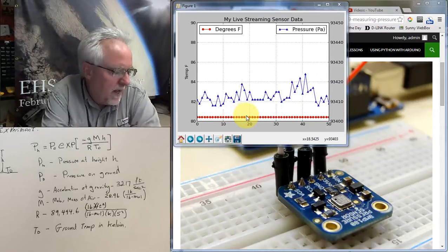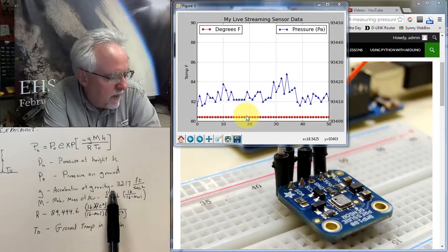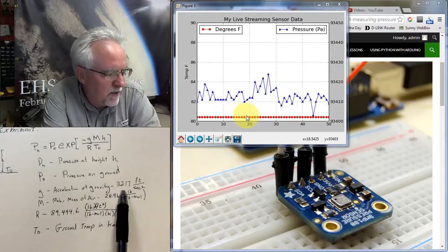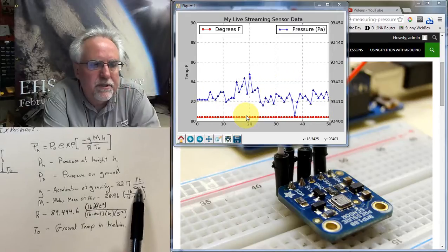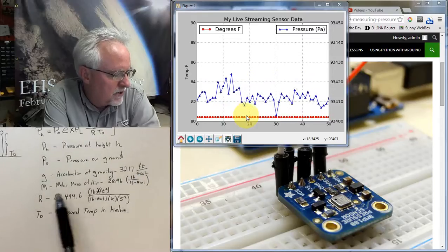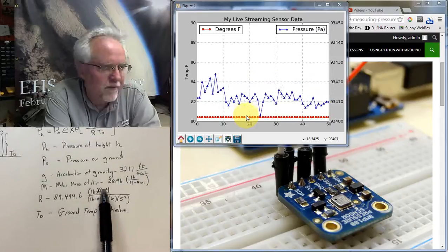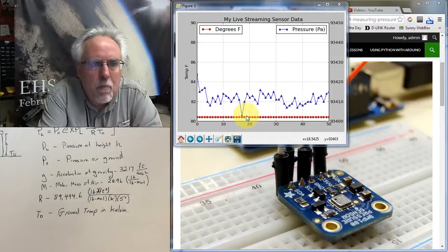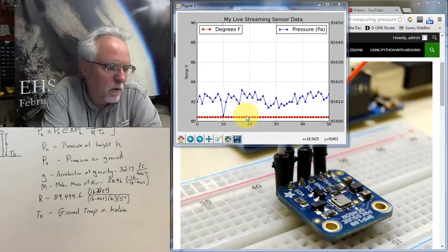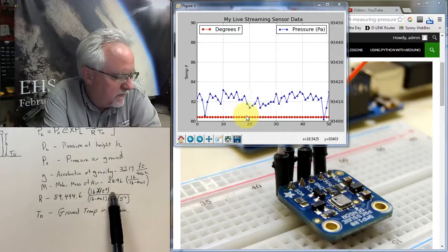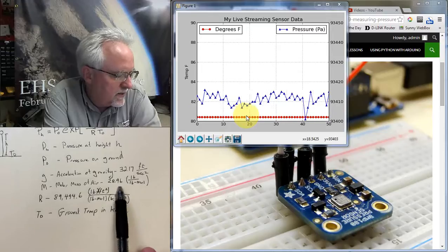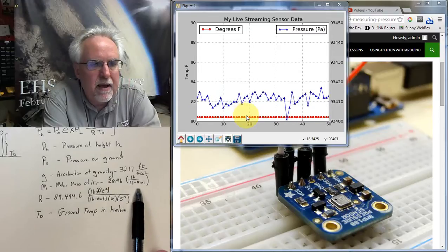I'm going to work in feet, and so because I'm working in feet, the acceleration of gravity is going to be 32.17 feet per second squared. M is the molar mass of air. That is, how much does one mole, what is the mass of one mole of air? And the answer for that is 28.96 pounds per pound mole.